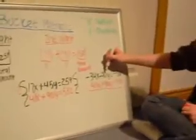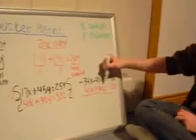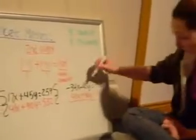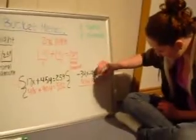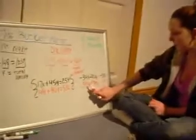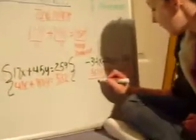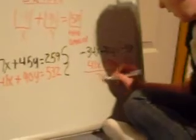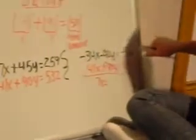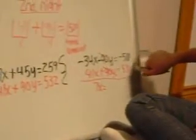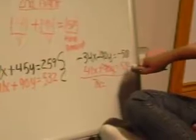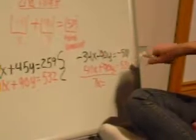So now that this is negative 90, if you add that to a positive 90, it cancels the Y out. So we're solving for X. So negative 34X plus 41X is 7X. And then you equal that to negative 518 plus 532, which is 14.